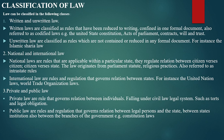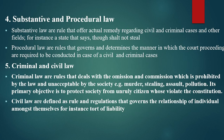We also have private and public rules. Private rules are rules that govern relations between individuals following a civil rule system such as laws and legal obligations. Public rules govern relations between legal persons and the state, between state institutions, and also between branches of government. A proper example of this is constitutional rules.